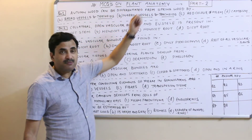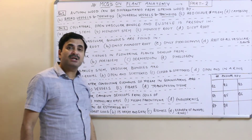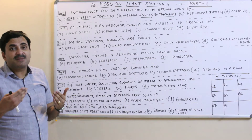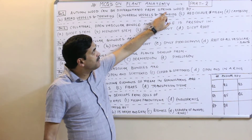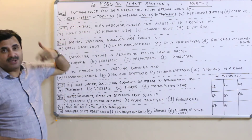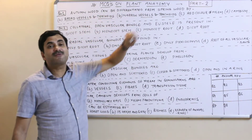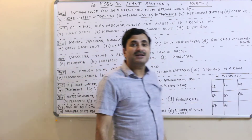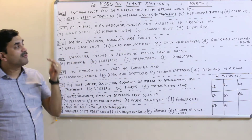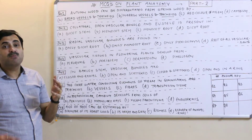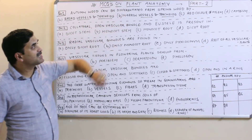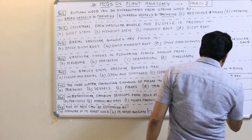In autumn season, the plant requires less water, so narrow vessels and tracheids are formed. In spring wood, formed in summer, the rate of transpiration is very high and plants require more water, so the vessels and tracheids formed are broad in diameter. Therefore, autumn wood can be differentiated from spring wood by having narrow vessels and tracheids. The answer to question one is B.